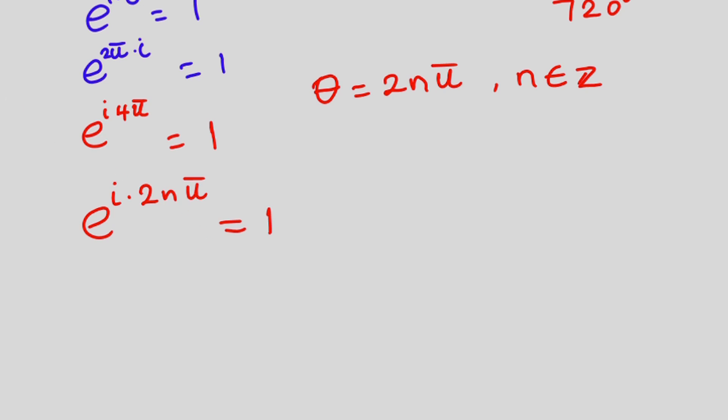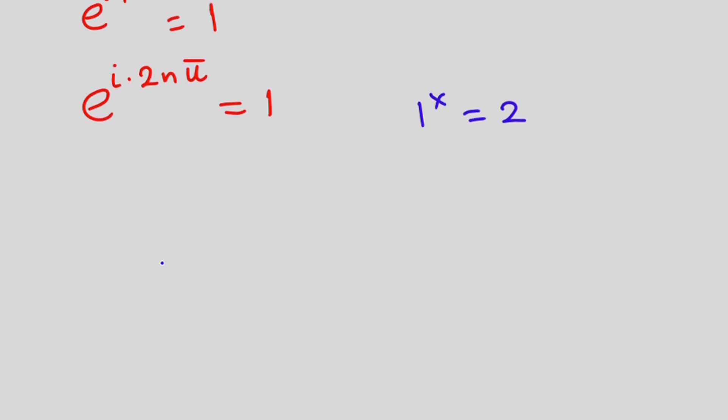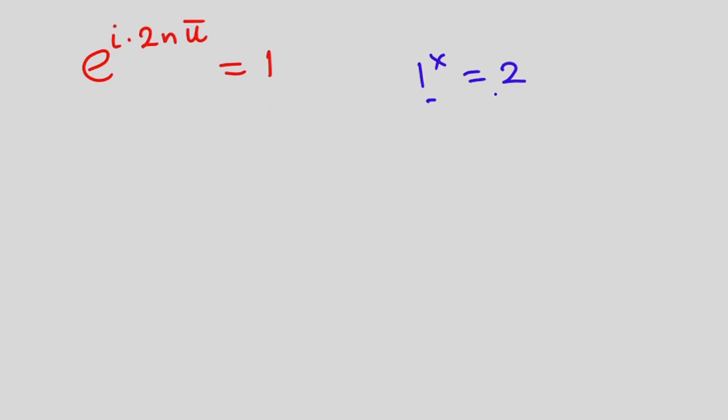Now, what does this mean? It means that 1 to the power x equal to 2. Wherever we see 1, we're going to put this. So let's go back to the equation and solve. This is the problem, actually. Let's solve it. Now we are going to replace this one by this. So we will have e to the power i times 2n pi, then to the power x is equal to 2.